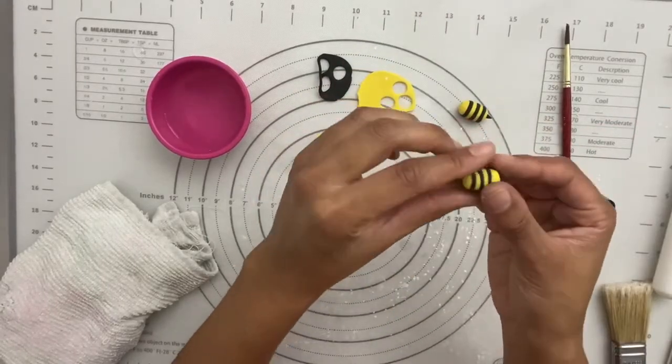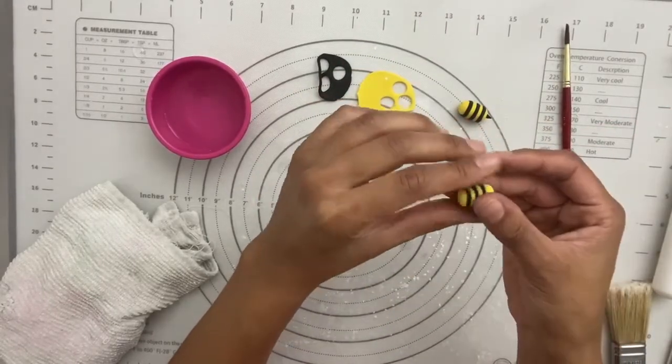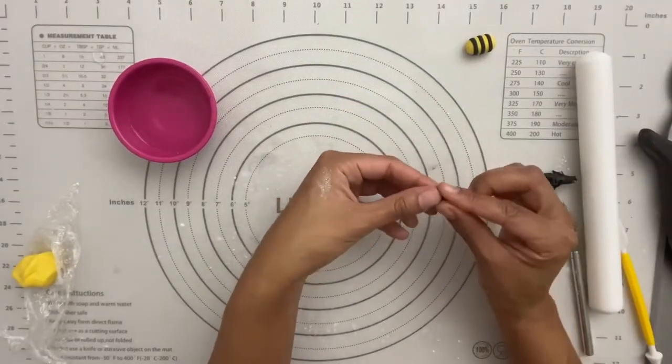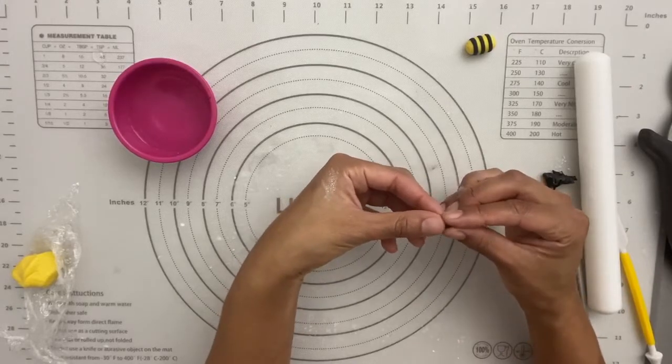I probably prefer the look of this method. It just looks a little cleaner to me, but whichever you prefer. And then if you want a little stinger, you can just come in with a little ball of fondant, pull it between your fingers until it comes to a little point.